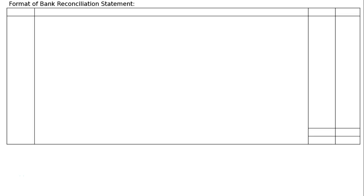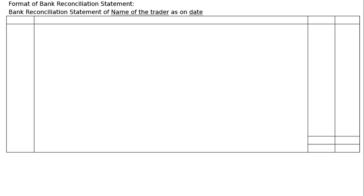Format of a Bank Reconciliation Statement and how to prepare one. This is the Bank Reconciliation Statement of Dash — the name of the trader — as on the date it is prepared. The columns include serial number, particulars, a plus column and a minus column, each with a rupee sign.